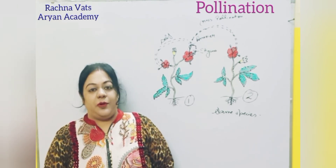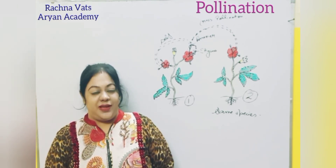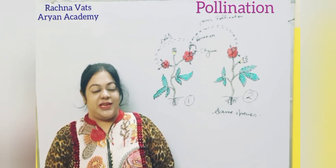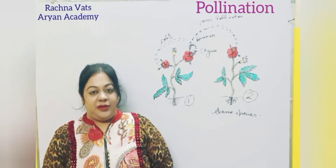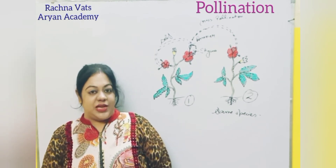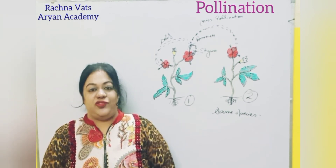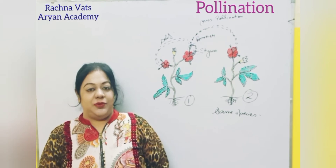So today we have learnt about pollination, its types, and the external agencies required for cross-pollination. If you liked the content, please like it, subscribe, share it with your friends, and continue with us for the next lecture. Thank you.